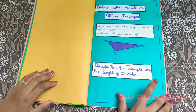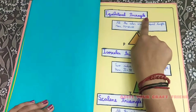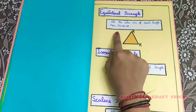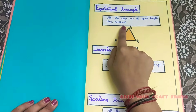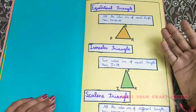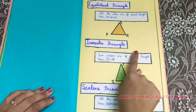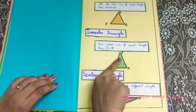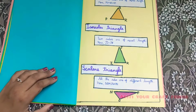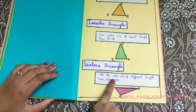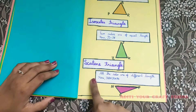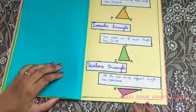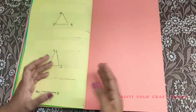Classification of a triangle by the length of its sides. Equilateral triangle: all sides are equal; here PQ = QR = RP. Isosceles triangle: two sides are of equal length; here JI and JK are equal. Scalene triangle: all sides are of different length; here NO ≠ OP ≠ PN. And that's the end.